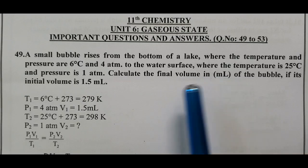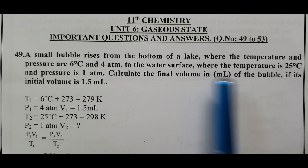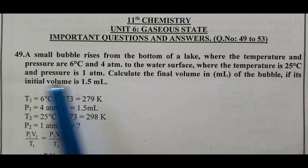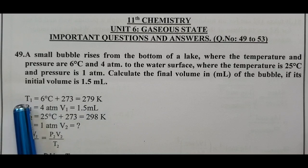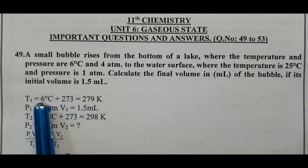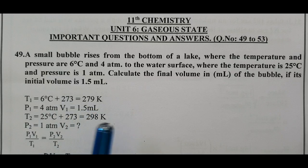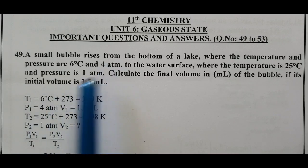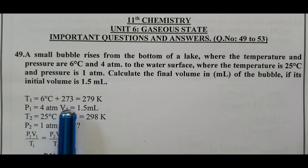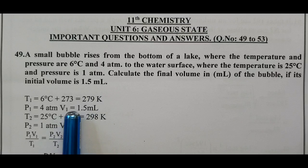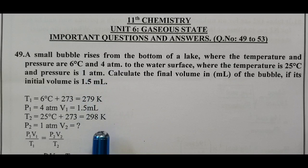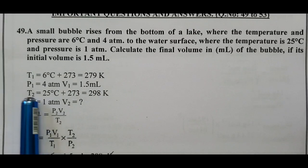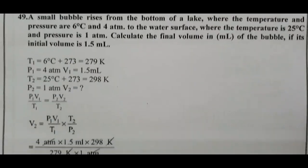Calculate the final volume in mL of the bubble if its initial volume is 1.5 mL. T1 equals 6 degrees Celsius converted to Kelvin scale by adding 273. P1 equals initial pressure 4 atm, V1 equals initial volume 1.5 mL. T2 equals 25 degrees Celsius, 298 Kelvin.